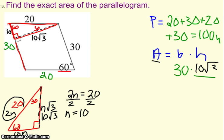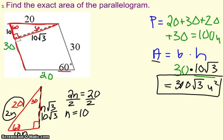So I'll put that into my formula. The base was 30. The height was 10 root 3. Since it's multiplication, we are allowed to combine these to be 30 times 10 is 300. So we have 300 root 3, and we label our answer units squared, because we were finding area. So the perimeter of this parallelogram is 100 units. The area is 300 root 3 units squared.